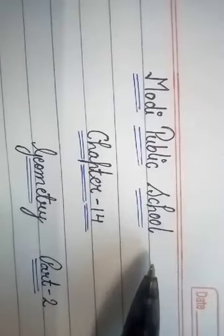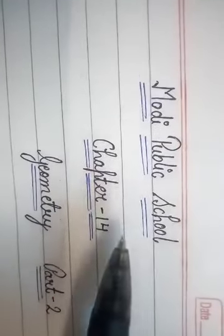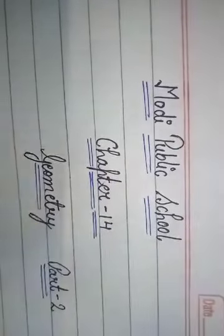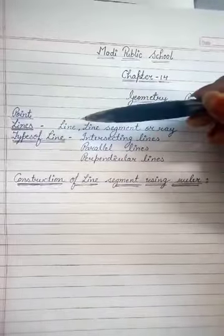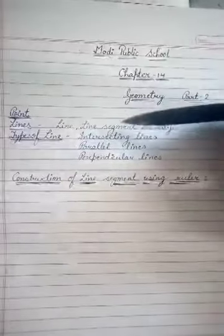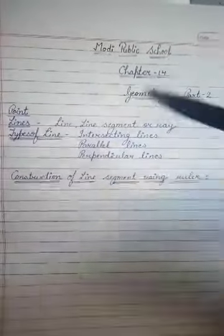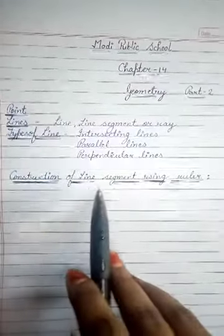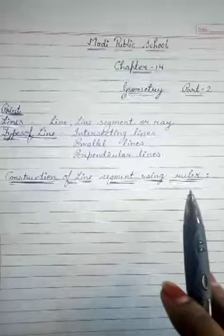Hello everyone, welcome to the online class of Moody Public School. Today we are going to discuss part 2 of chapter number 14, Geometry. In our previous video we had discussed about point, lines, line segment or ray, types of line, intersecting lines, parallel lines and perpendicular lines. Today we are going to discuss construction of line segments using a ruler and about angles.